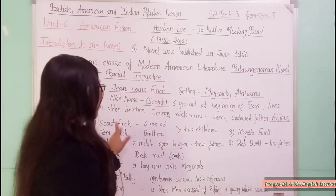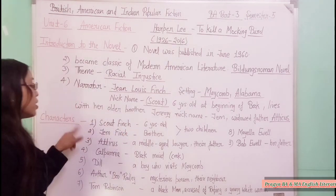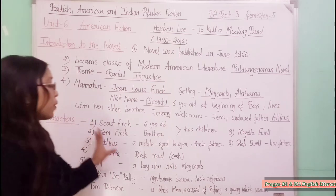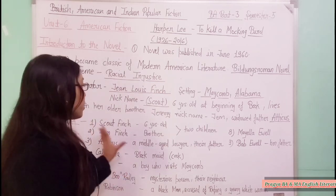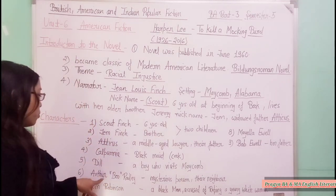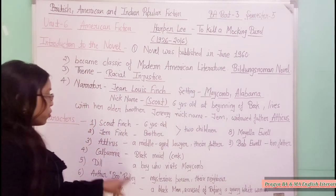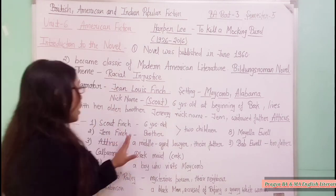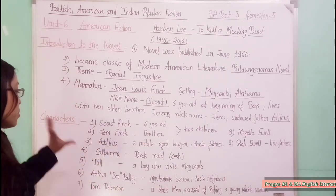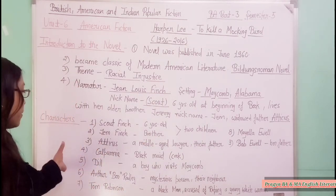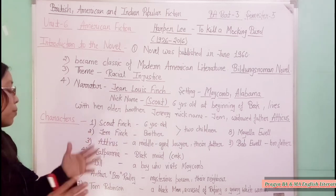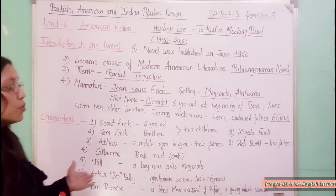When Atticus's two children are walking home from school, Bob Ewell attacks them trying to kill them. A mysterious person saves the children and takes them to safety. These two children then see things from a new point of view.